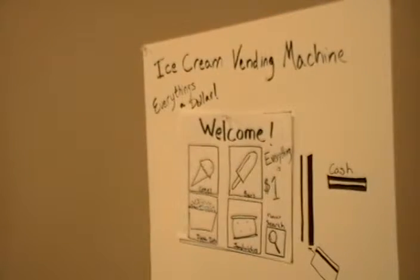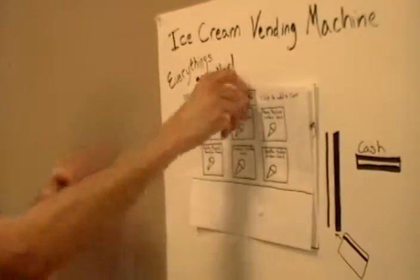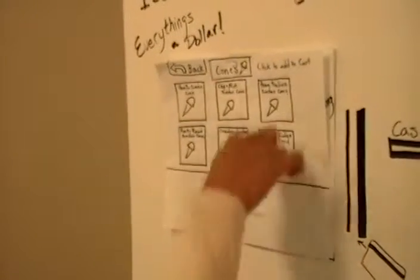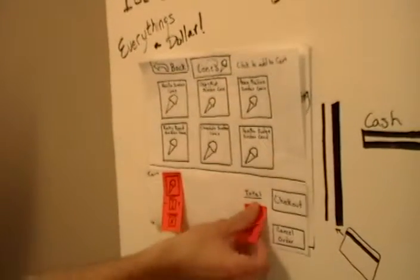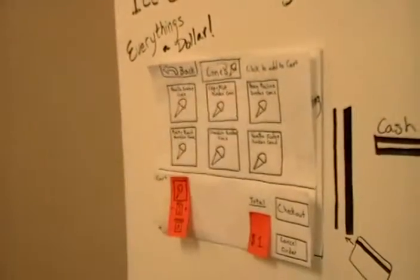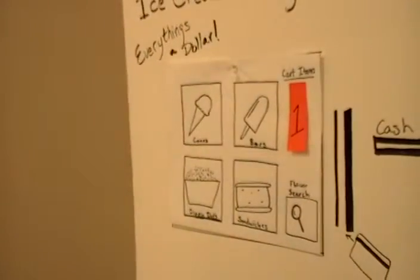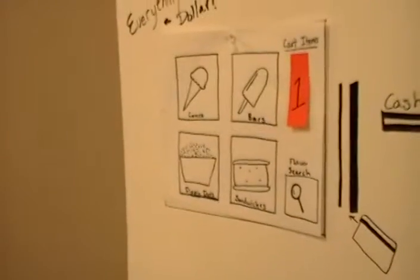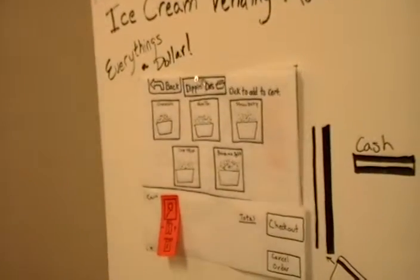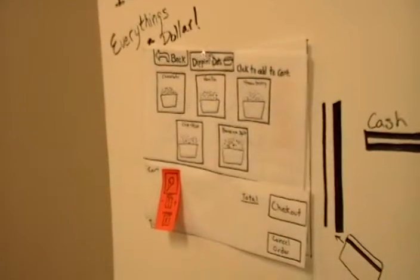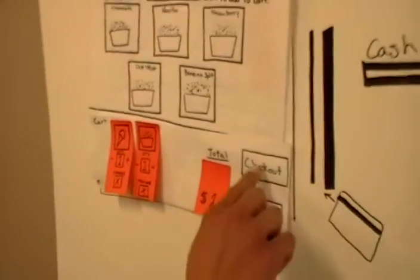Purchase any two items from any two categories and proceed to checkout. I'll have a cone, and I'll have a vanilla fudge sundae cone, and I'll get something else. I will also get some Dippin' Dots, and I'll get Banana Split, and I'll check out.